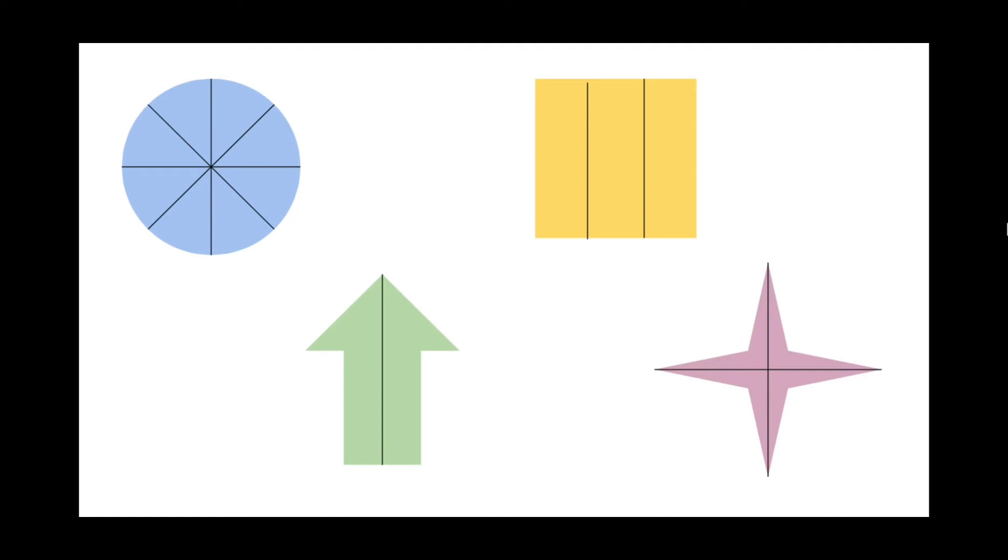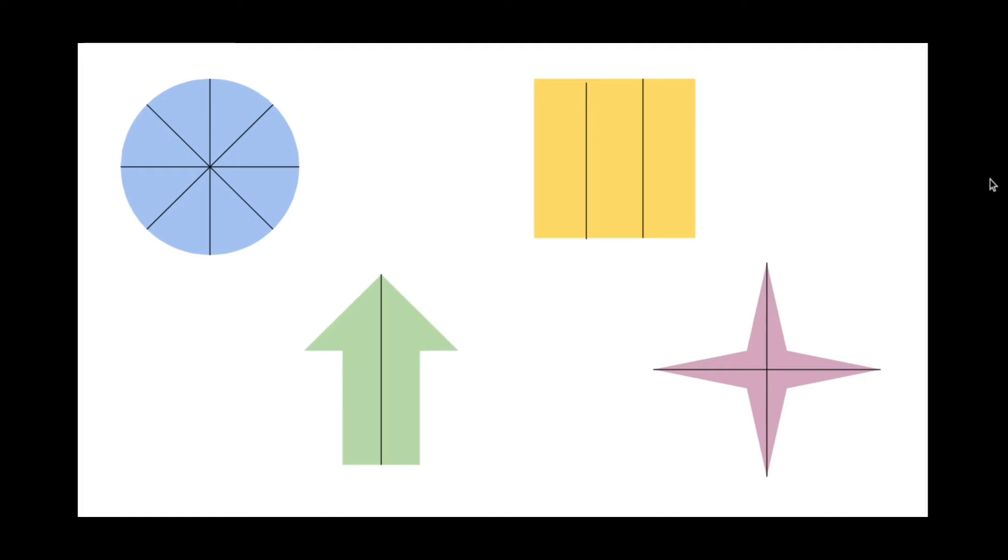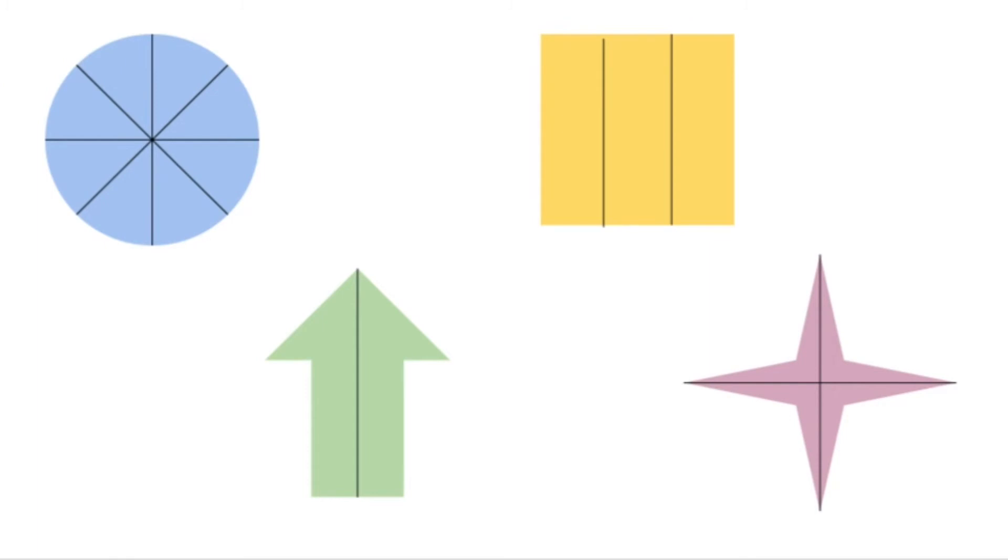Your next job is to color one of each piece. So here we have one piece colored already. I've colored in one of the eight pieces. Now we're going to color in one half of the arrow because there's two pieces, just doing our best job we can coloring in.